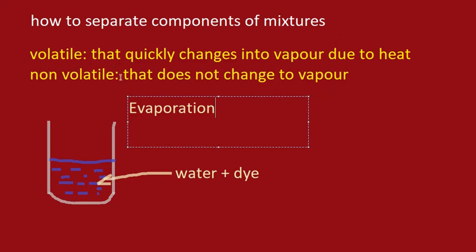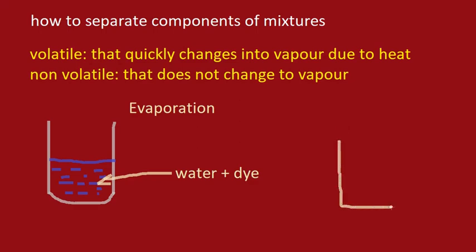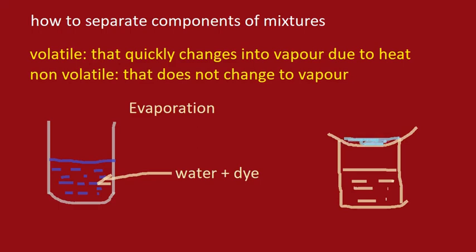Evaporation is the process adopted in order to separate components of a mixture out of which one is a volatile substance and the other is a non-volatile substance. To do this, we take a beaker in which we put some water, and over this beaker we place a watch glass. In this watch glass we place the ink — that is the mixture of water and dye — and then we put this beaker on a stand and heat it from below.